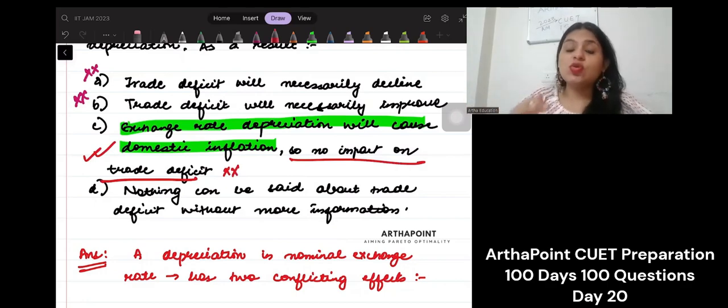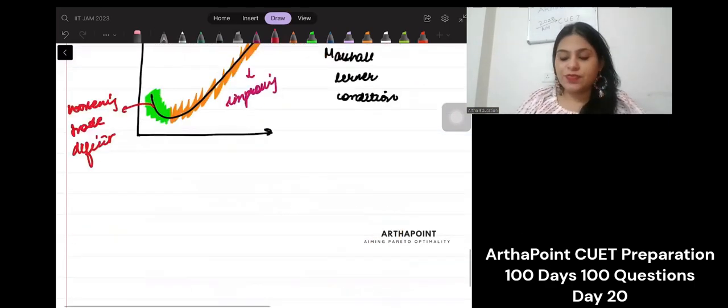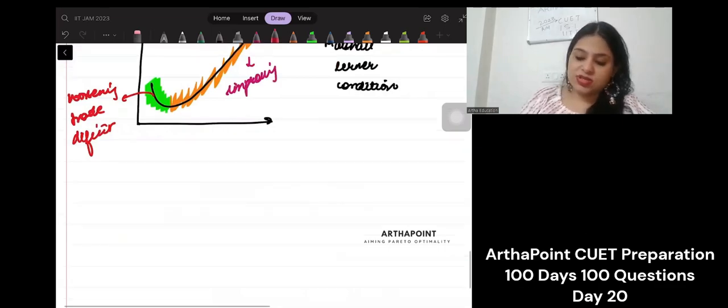But it says there will be no impact on trade deficit. This part is wrong. There will still be impact on the trade deficit, we just don't know whether it will improve or worsen unless you tell us something about the Marshall-Lerner condition. So the correct option to this is D.